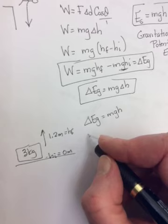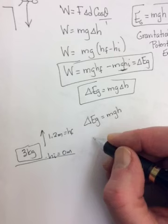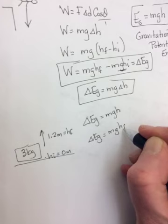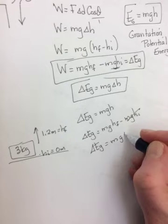Then the question would be, how much work has been done on the book, or what is its change in gravitational potential energy? You could write Mghf minus Mghi, but knowing that the Hi is zero, we will opt and just write the change in gravitational potential energy is equal to MGH.